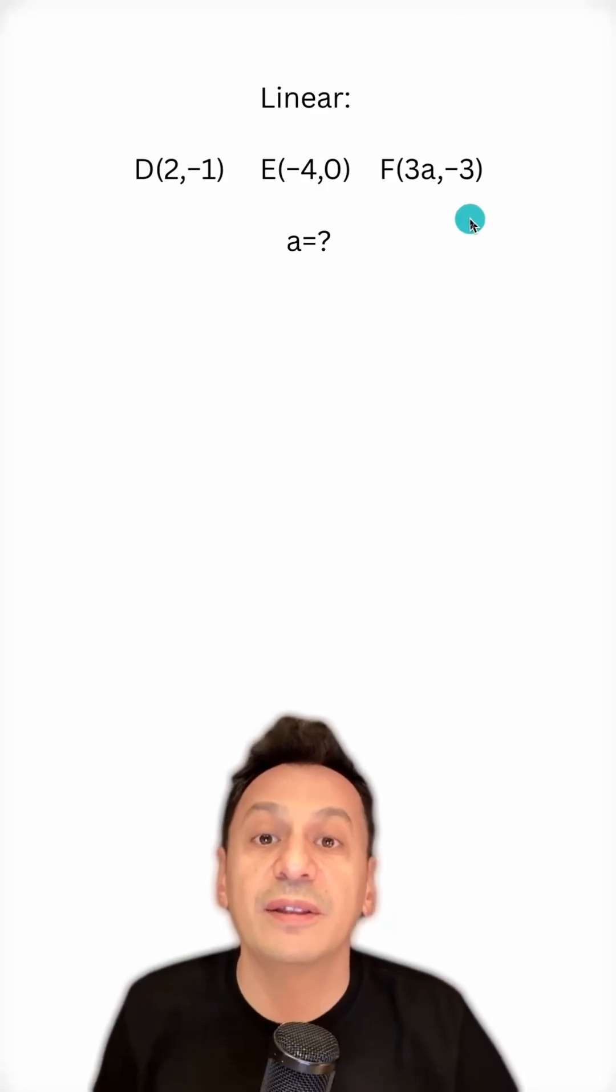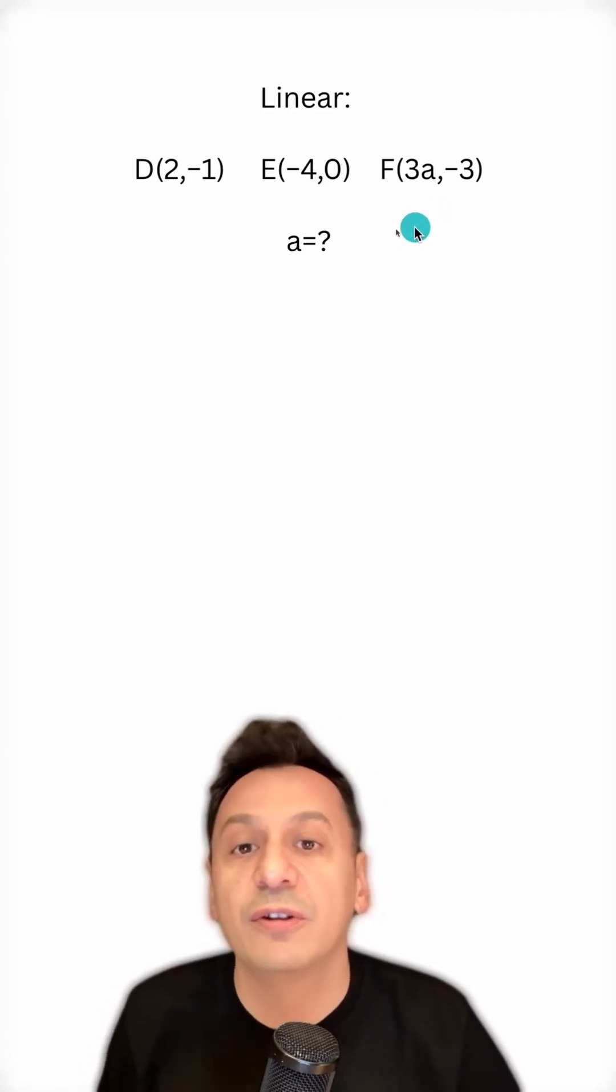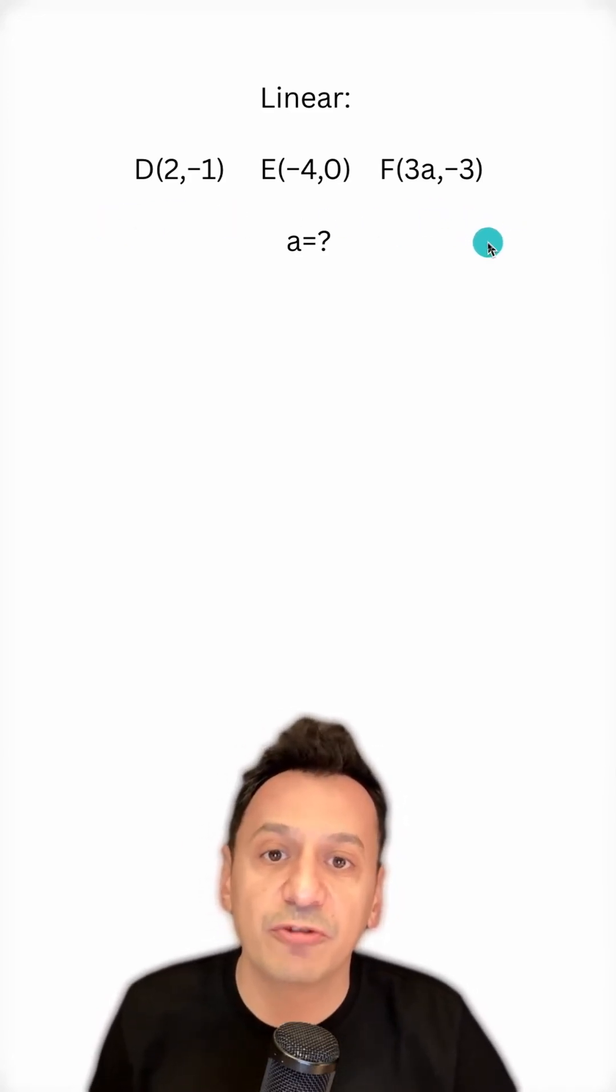We are given three points and it is stated that these three points lie on the same straight line. 'a' is being asked. First, let's look at what it means for points to be on the same straight line.